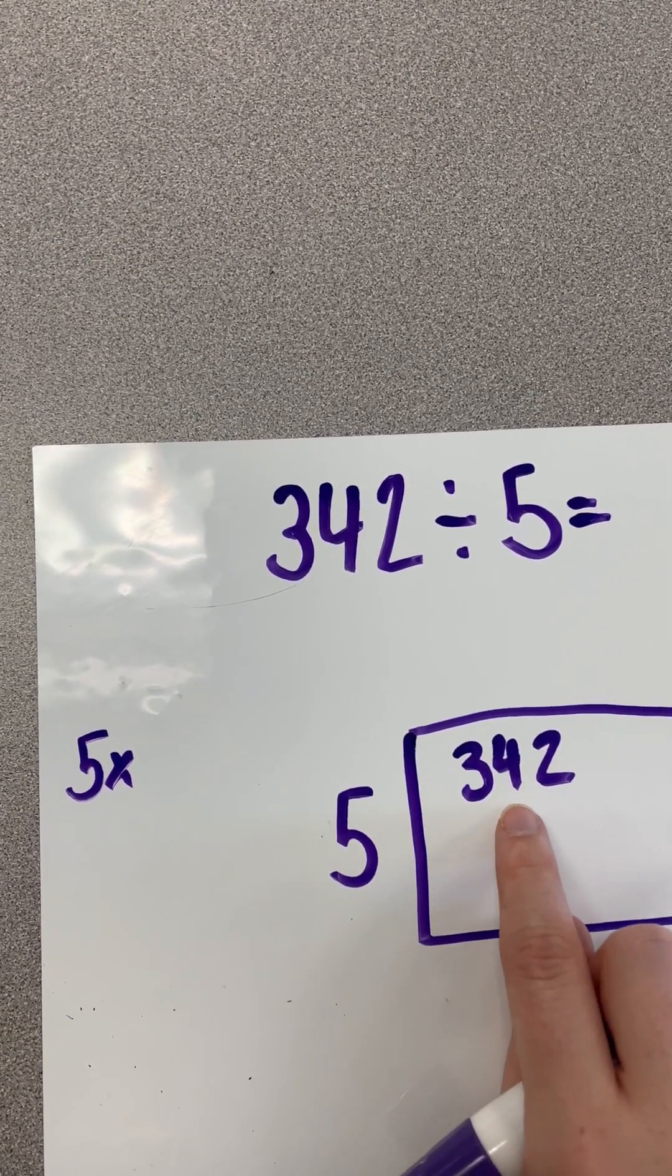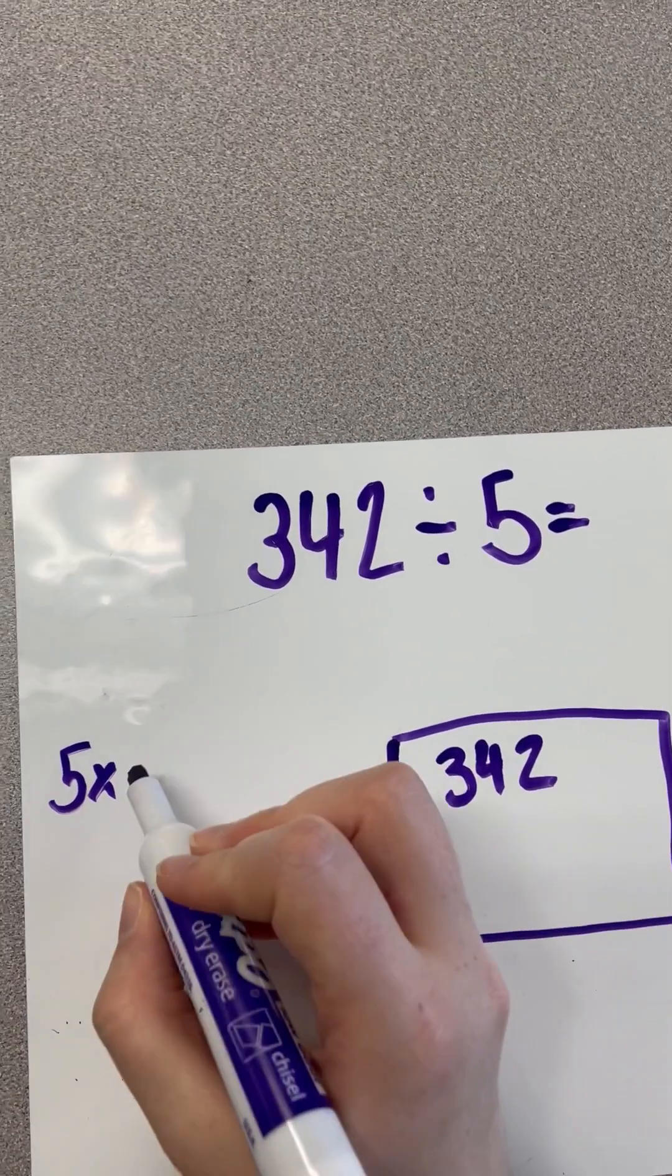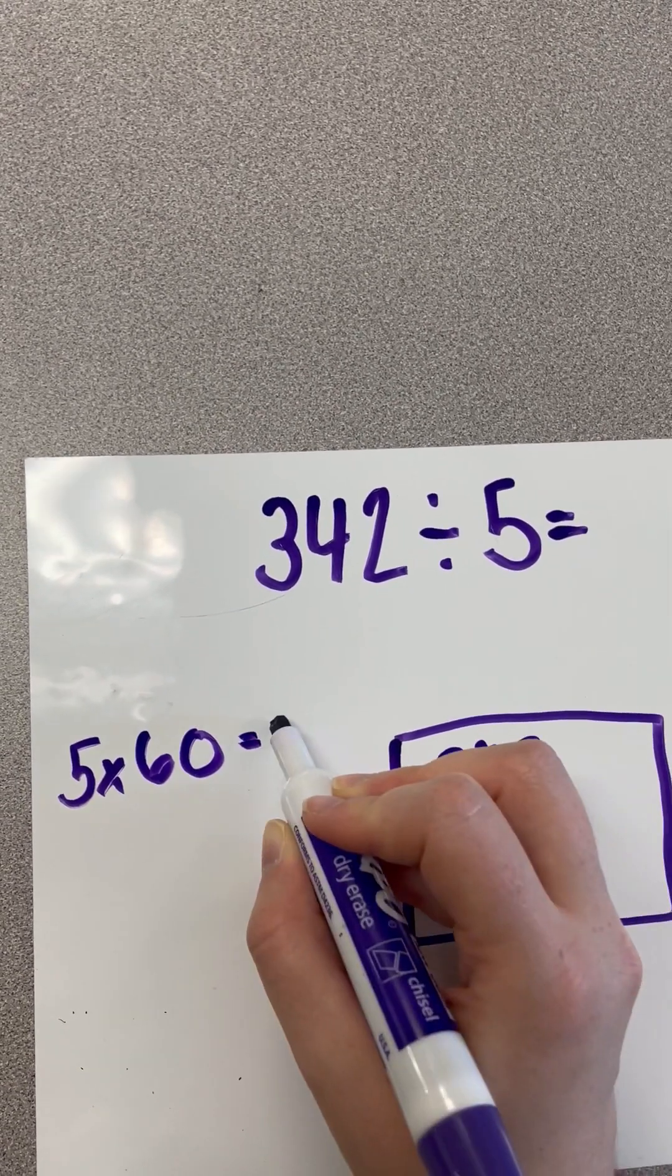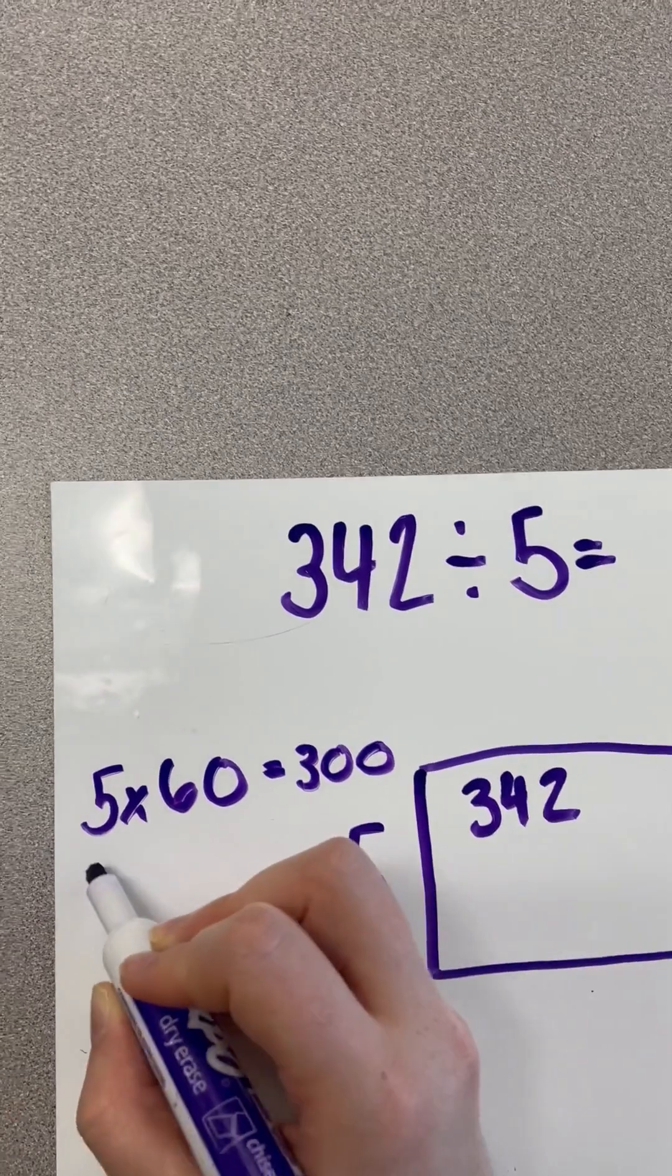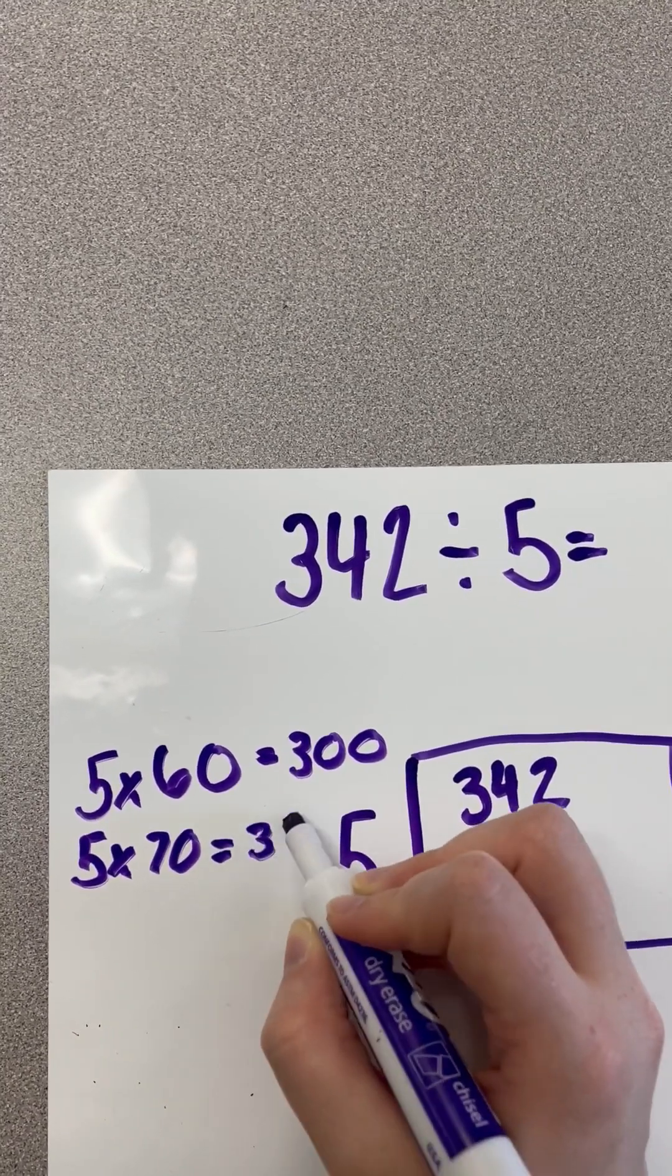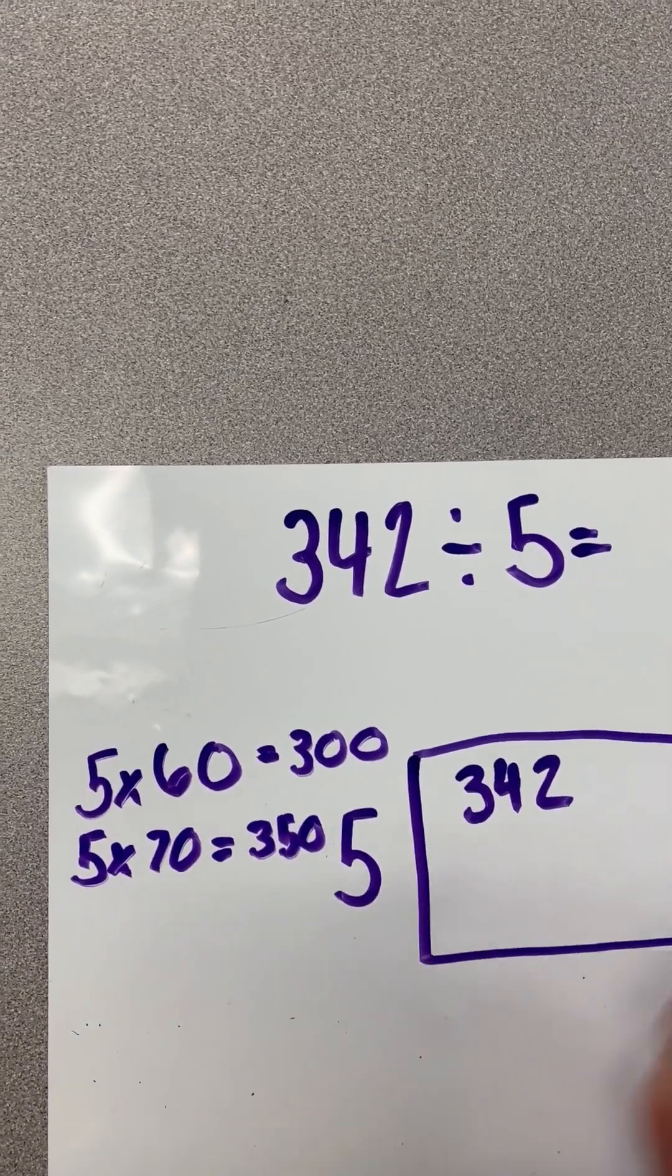I'm going to look at these first two digits and say, what times 5 gives me close to 34? Well, I know 5 times 6 is 30, so 5 times 60 would be 300. Let me just go ahead and check 5 times 70 as well, which I would get 350. Well, that is too much, so I'm going to go ahead and use 60.